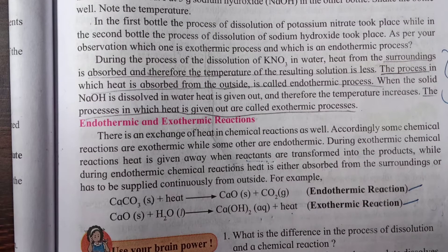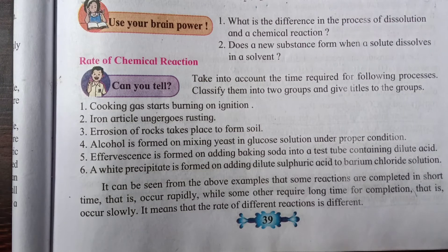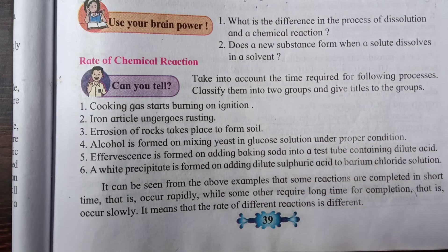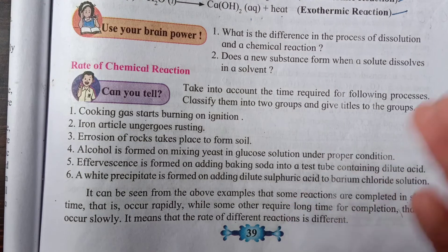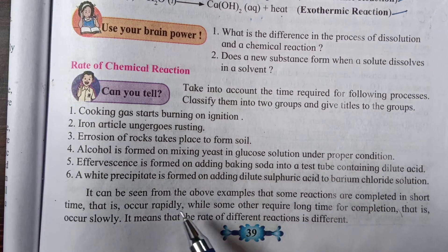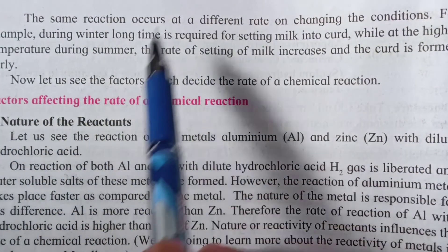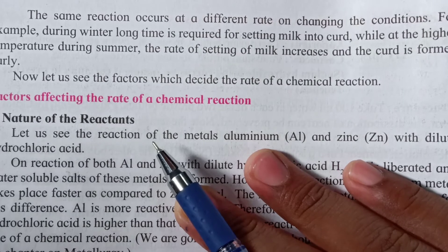Now let us see the rate of chemical reaction. A chemical reaction takes a specific amount of time to complete, and that time can be increased (faster) or decreased (slower) using catalysts or other factors. Some reactions are completed in a short time and occur rapidly, while some require a long time. The same reaction can also occur at a different rate when conditions change.